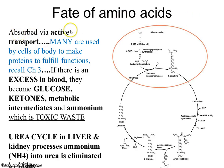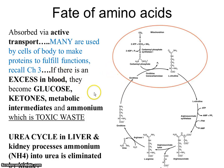The fates of amino acids: after absorption through active transport, many are used to make proteins fulfilling different functions of the body. If there is an excess in the blood, they can become glucose, ketones, and different metabolic intermediates. In the process of using these amino acids we produce the toxic waste product ammonia, which must be dealt with.